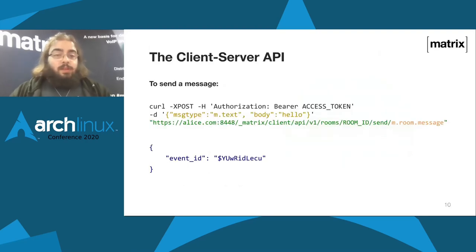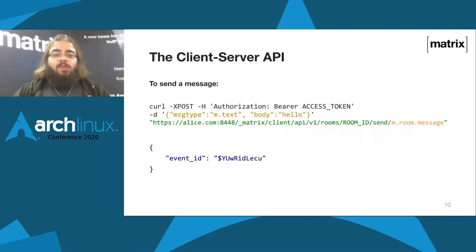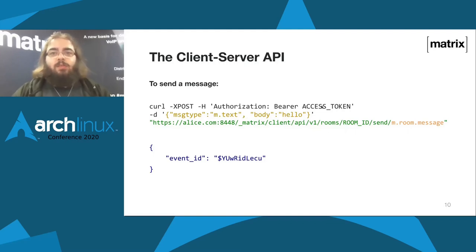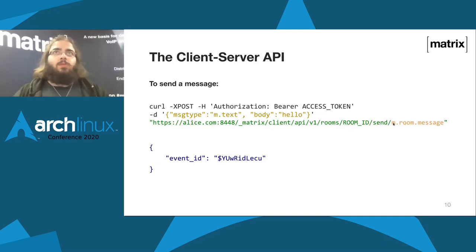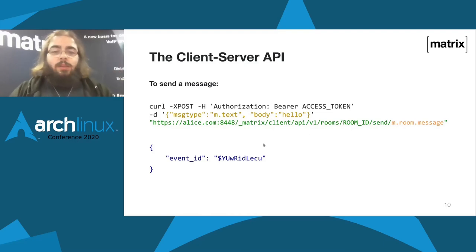The client-server API — like all Matrix APIs — is just JSON over HTTP. Sending a message in Matrix is actually very simple; you can do that with just a simple curl command. You provide an access token given at login or registration, send the content of your message — for example a text saying 'hello' — to your server into a room, and give it a type. The timeline of the room in Matrix is organized by events, which have types. Each event is a blob of JSON with a type and content, and it returns an event ID.